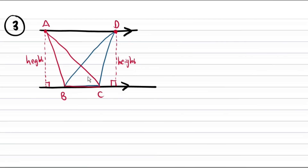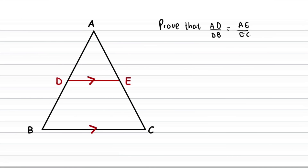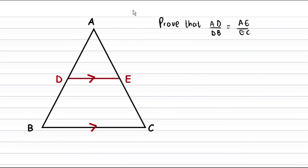For these triangles, the base is also the same since they share BC. Now that we've covered those three facts, we can prove the theorem. We must prove that AD over DB equals AE over EC. The best way to include these lengths is by using the areas of triangles. To begin, we will construct heights.